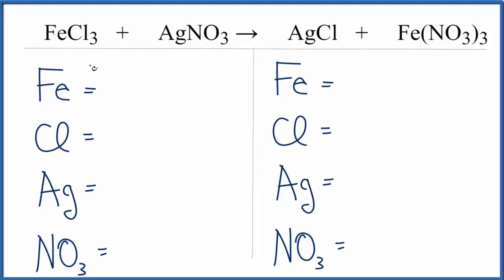In this equation we have FeCl3 plus AgNO3. They're going to combine in a double displacement reaction. So let's add the atoms up on each side.